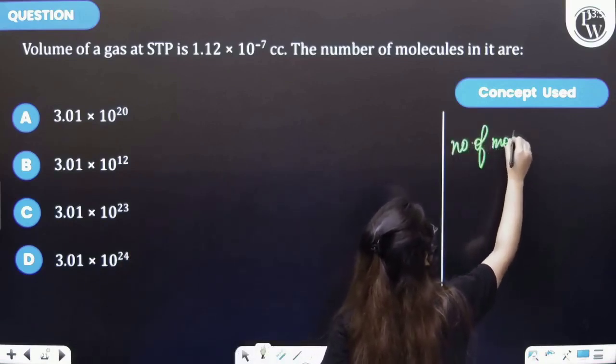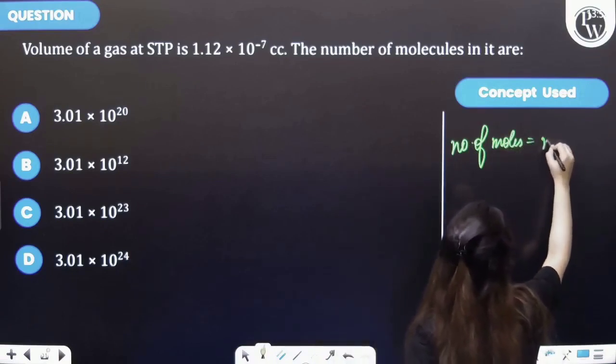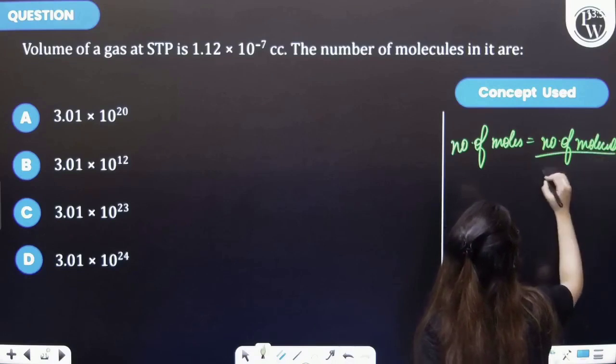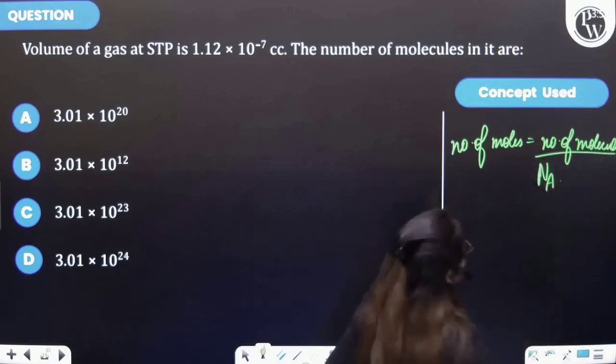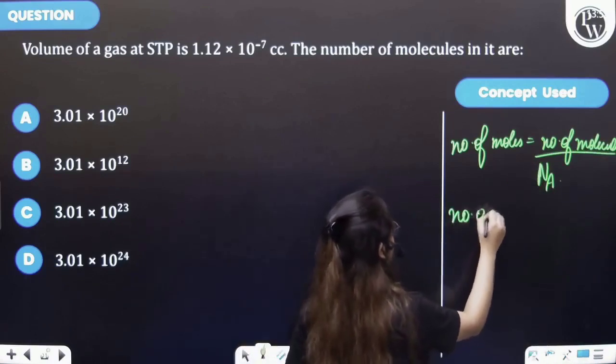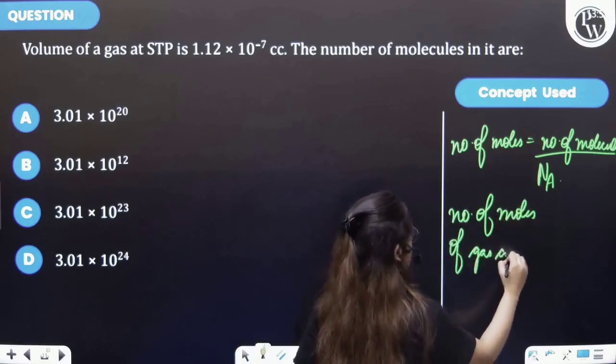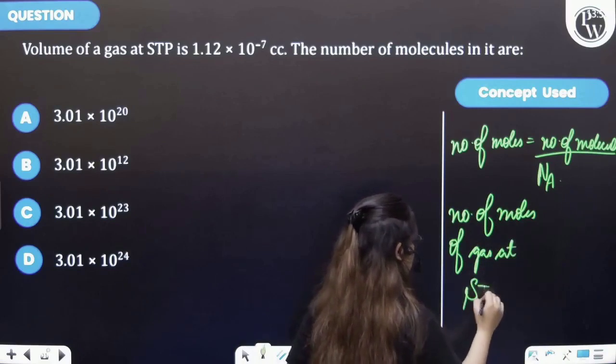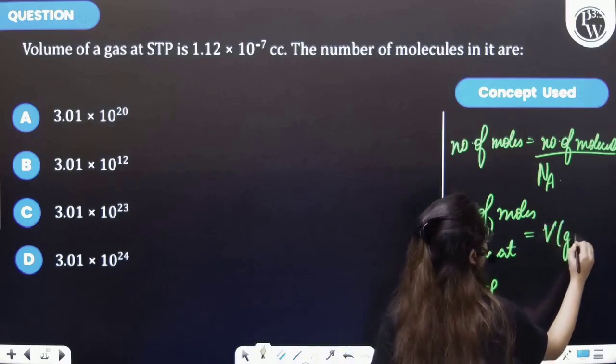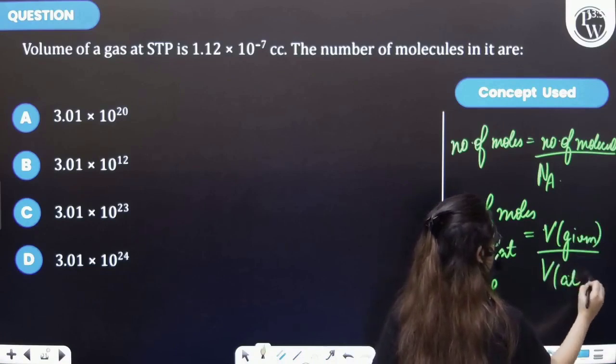Number of moles will be equal to number of molecules upon Avogadro's number. Also, if I consider the number of moles in terms of gases at STP, the number of moles of gas at STP is equal to volume given to you upon the volume at STP.